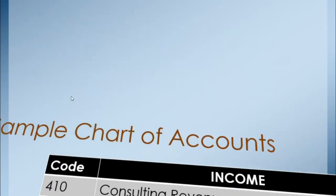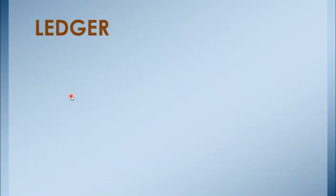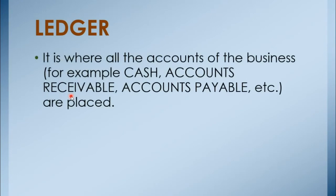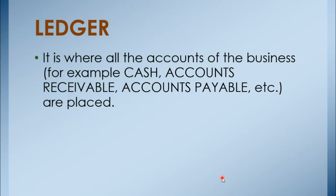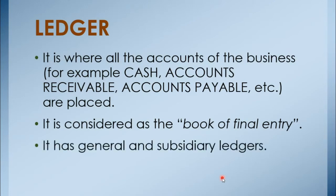So now, what is a ledger? It is where all the accounts of the business — for example, cash, accounts receivable, accounts payable, etc. — are placed. It is considered as the book of final entry. In the ledger, all cash, accounts receivable, accounts payable, and all accounts from the journal entries are consolidated. Of course, you have to consider also if they are recorded as debit or credit. Then after that, we get the ending balances of each account. It has general and subsidiary ledgers.